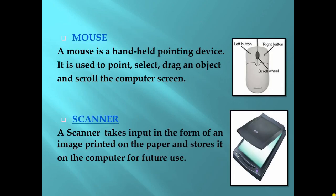Next is the mouse. A mouse is a handheld pointing device. It is used to point, select, drag an object, and scroll the computer screen. This is a mouse — it has a left button, a right button, and a scroll wheel on it.